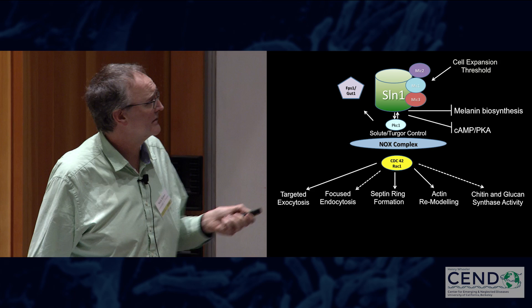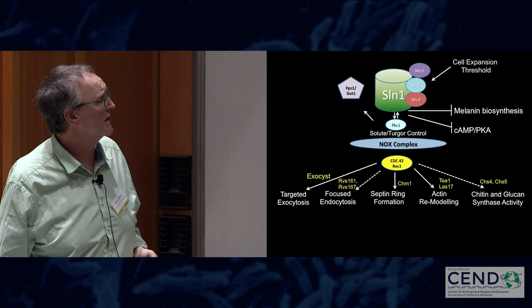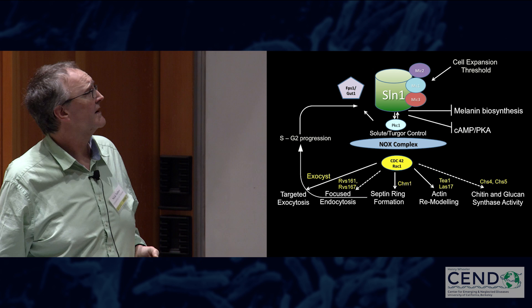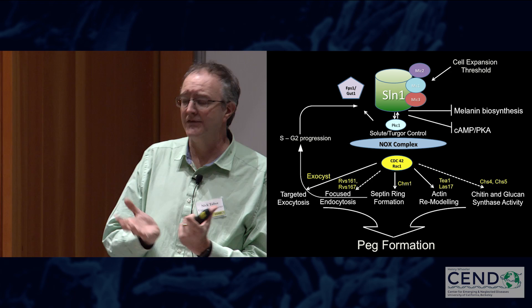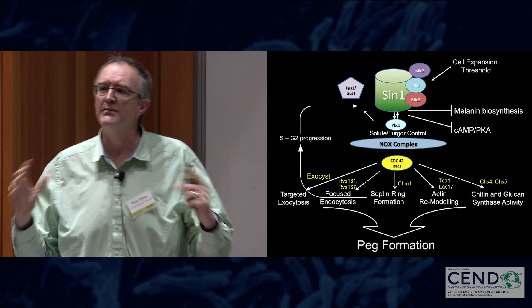This leads to a series of events including septin ring formation, actin remodeling, chitin and glucan synthase activity as the penetration peg is developed, targeted exocytosis at the pore, and endocytosis for membrane homeostasis. This is also subject to a cell cycle control point: only if the nucleus has passed from S phase into G2 will the appressorium be functionally competent, ultimately leading to PEG formation. We're beginning to have an idea about how appressoria function, and we have a number of leads to test these assumptions.